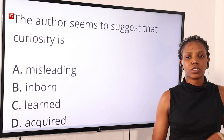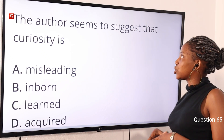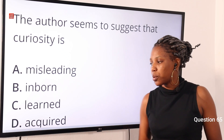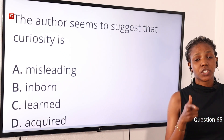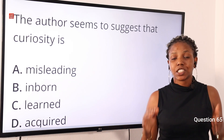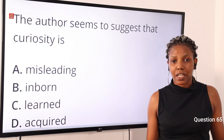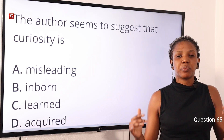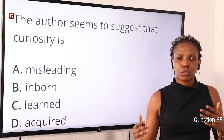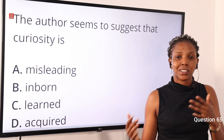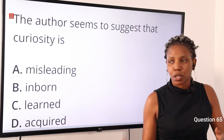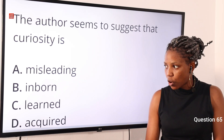Question 65: The author seems to suggest that curiosity is — option A: misleading, option B: inborn, option C: learned, option D: acquired. The answer is inborn. From the beginning of the passage, we learn that curiosity is as clear and definite as urges — strong desires. We get the picture that curiosity exists from birth; everybody is curious to know certain things and feels that every discussion directly or indirectly concerns them. So option B is the correct answer.